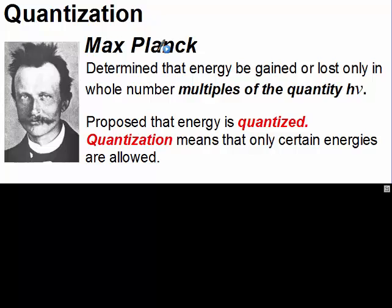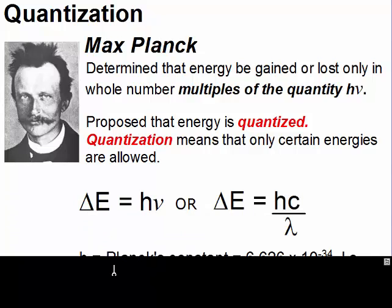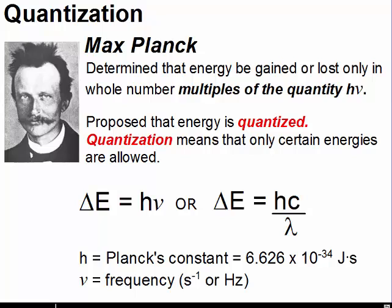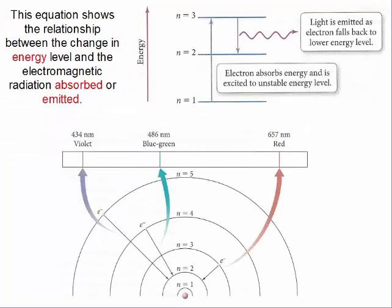In the case of the glow-in-the-dark star, only the green light was given off. The equation is ΔE = hν, or ΔE = hc over wavelength. H is Planck's constant at 6.626 × 10⁻³⁴ joules·seconds. Joules is our unit for energy. Nu is frequency, which is seconds⁻¹ or hertz, and E is energy in joules. This equation shows the relationship between the change in energy level and the electromagnetic radiation that would be absorbed or emitted.